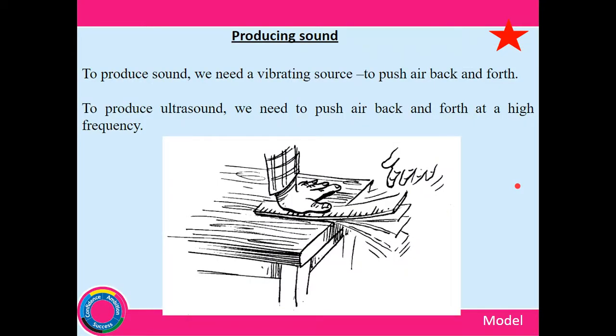Producing sound. Now this is something you could try at home if you have a ruler. Just put your hand on the desk and you can vibrate the ruler up and down. You flick it and it will vibrate backwards and forwards. To produce a sound, we need a vibrating source to push air backwards and forwards. If you have a speaker, if you put your hand on a speaker, you can actually feel that the speaker is moving. And if you've got people who drive and they've got big subwoofers in the car, you can actually feel that compression wave if they've got it turned up loud.